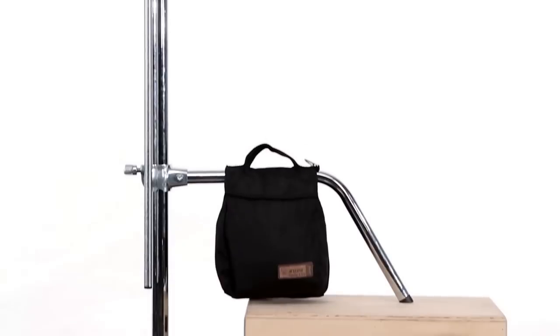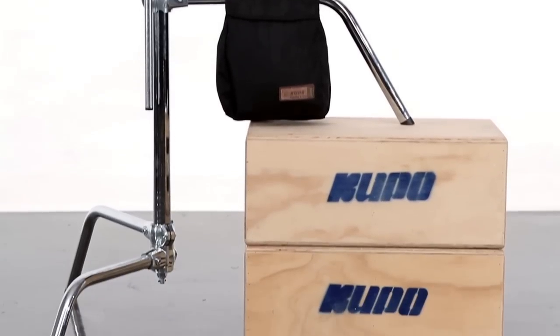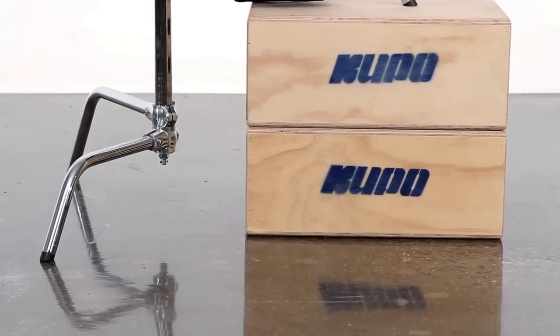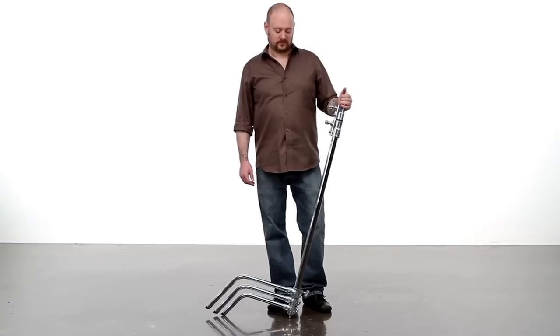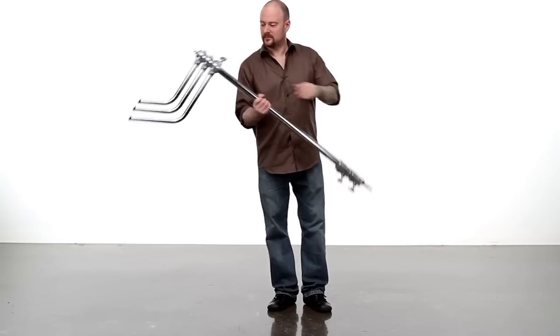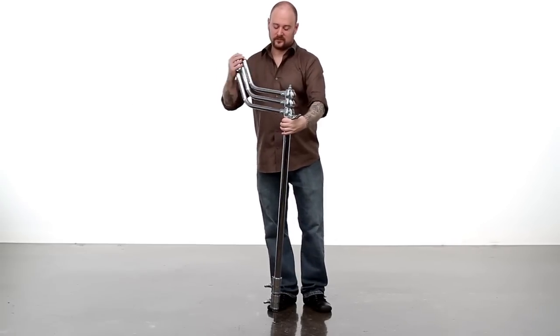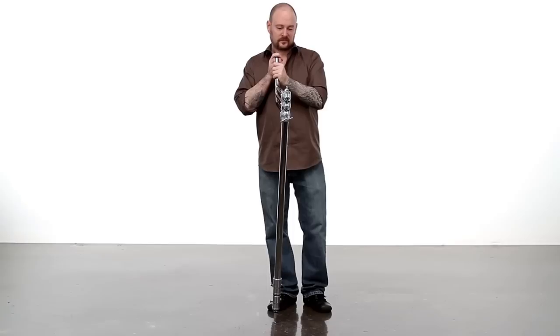The Sliding Leg allows you to level your C-Stand on uneven terrain such as an incline or multi-level surfaces such as a flight of stairs. To open the Master C-Stand with the sliding leg, first turn the stand over and rest it on its stud to have easy access to its legs.